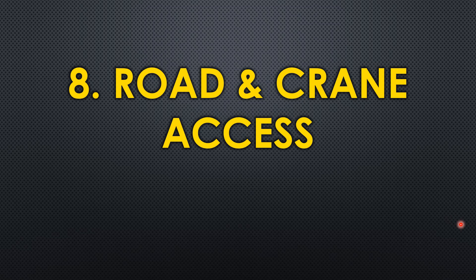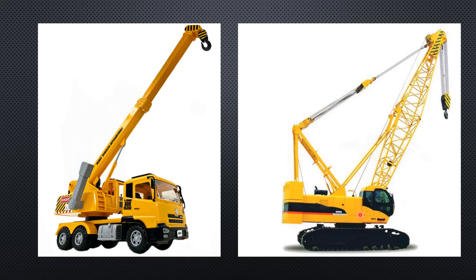The eighth parameter is road and crane access. Without crane and road access, you won't be able to install, remove, or maintain the pump. You must design the pump piping in a way that allows crane access. If you run piping densely over the top of the pump, the crane cannot reach it. Always provide maintenance accessibility for cranes to allow proper installation and maintenance operations.